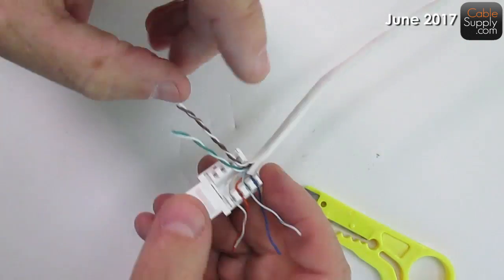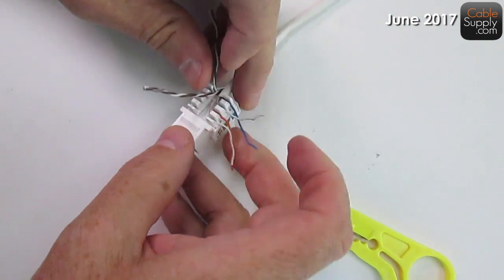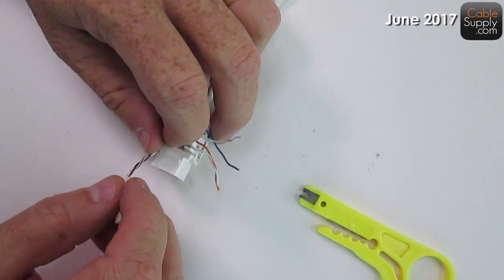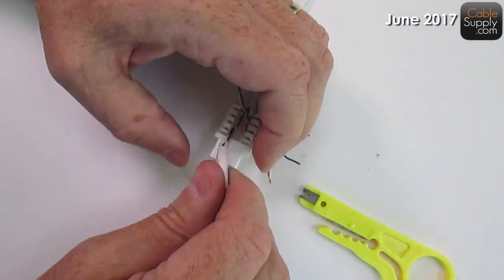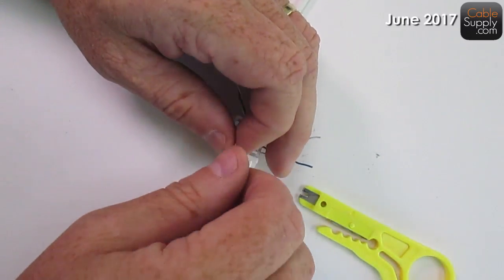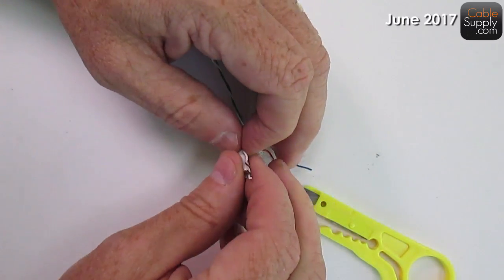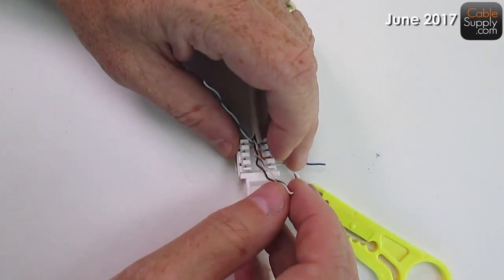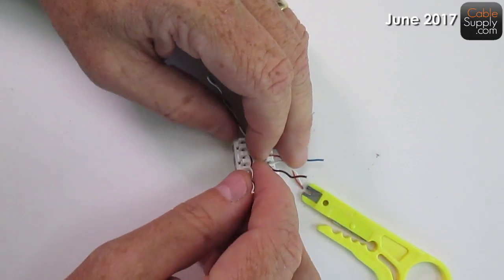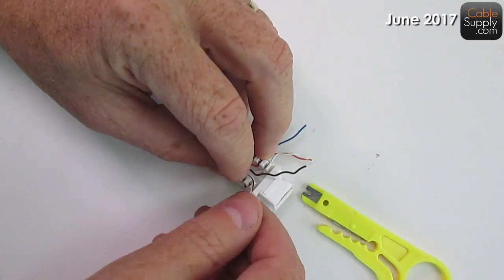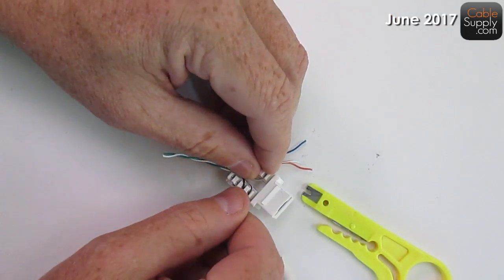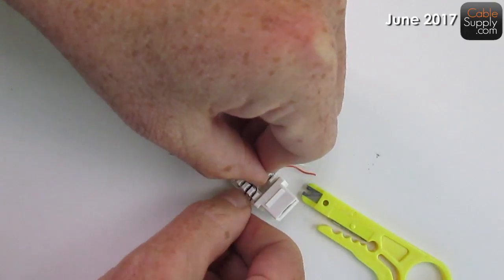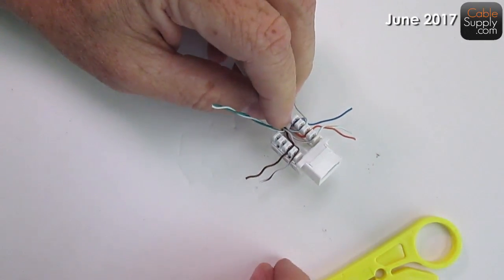And then the next is going to be brown. So I'm going to take my brown pair and I'm going to separate it. Separate it right to the edge there. I'm going to have to go all the way down. You want these cables to be as tight as you can. It doesn't have to be absolutely as tight as possible, but as tight as you can. And you push that down like that. And then of course, the last one.